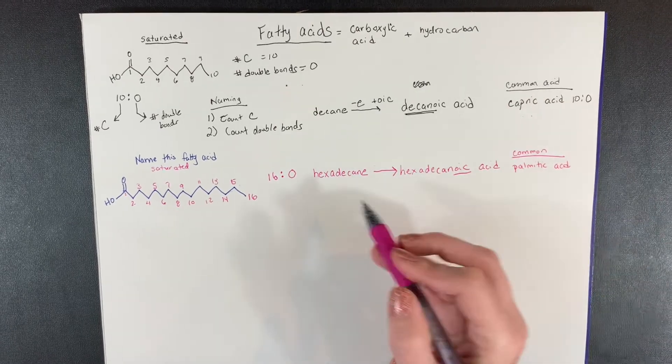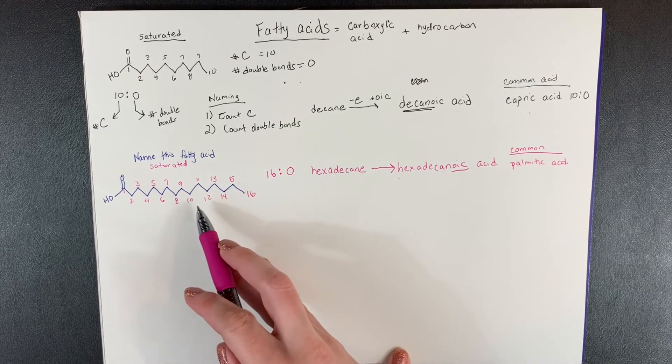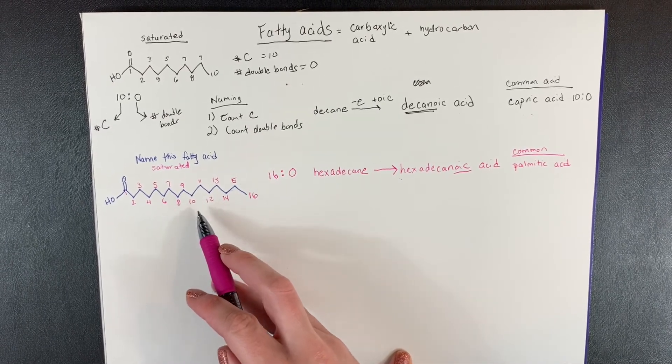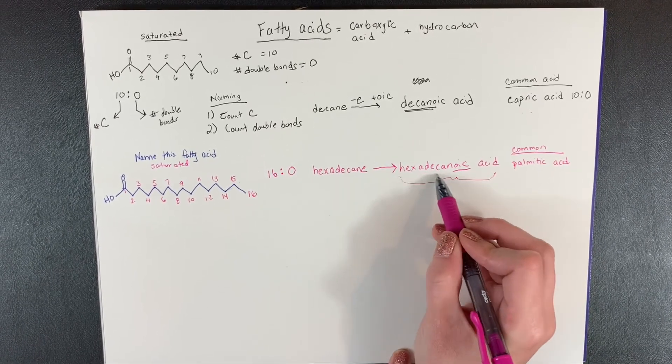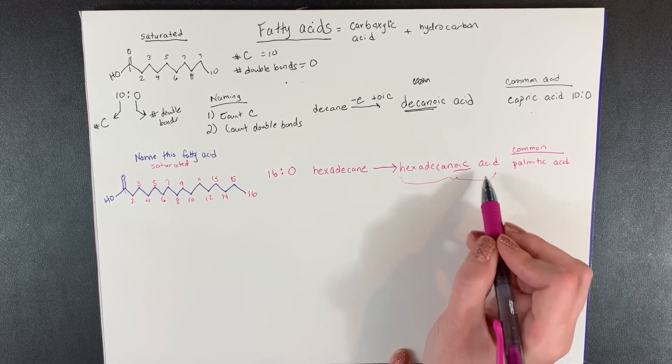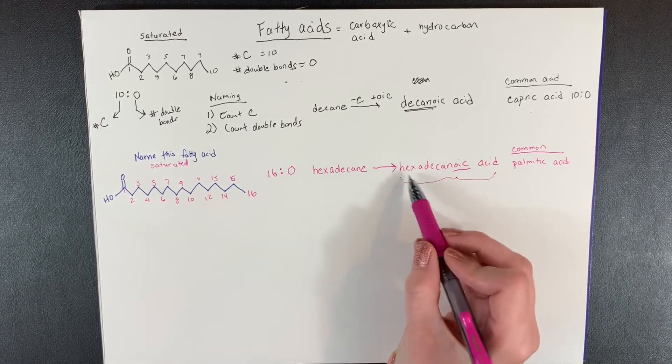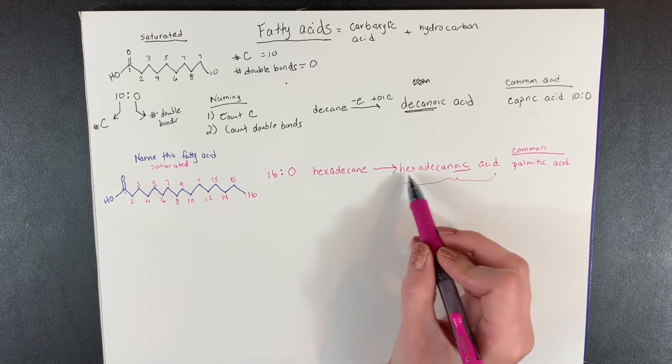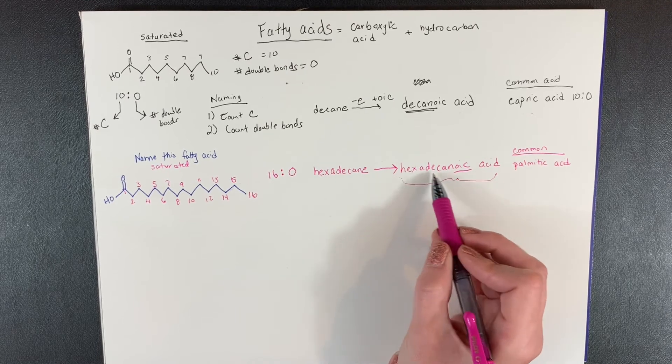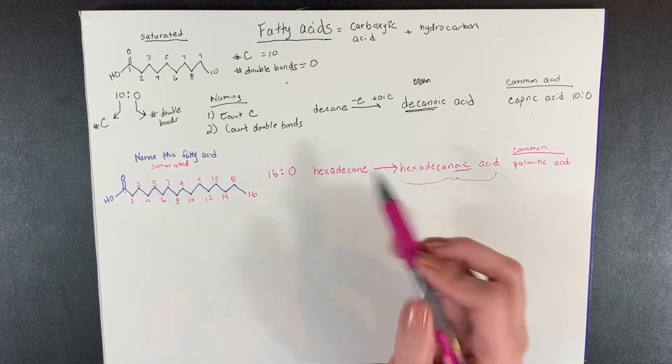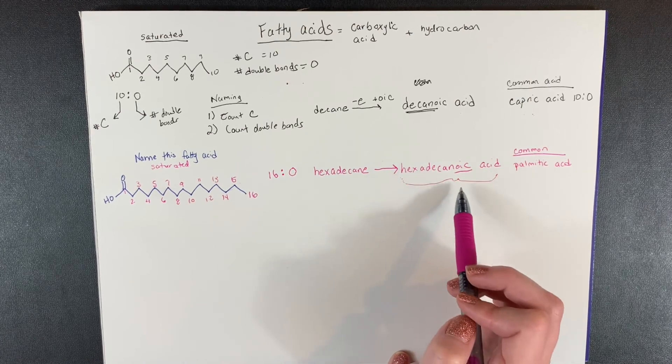But what's important is that you can name each of these fatty acids if I just give you a structure. Now, another thing I could do is simply give you this name. If I gave you hexadecanoic acid, would you be able to draw this structure? And you should be able to because you know from the name that it is 16 carbons. And I'll show you that soon you'll see this also means there's no double bonds. So you should be able to go from a structure to a name or a name to a structure.